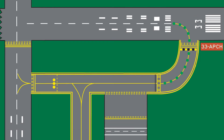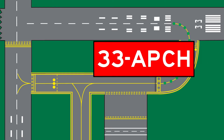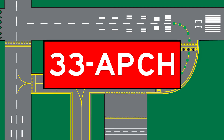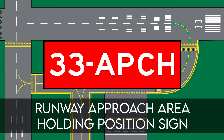The next mandatory sign is the runway approach area holding position sign. At some airports it is necessary to hold an aircraft on a taxiway located in an approach or departure area for a runway, so that the aircraft does not interfere with operations on that runway. In these situations, a sign with the designation of the approach end of the runway followed by a dash and the letters APCH will be located at the holding position on the taxiway. For example, the sign may protect the approach to runway 15 and/or the departure for runway 33.